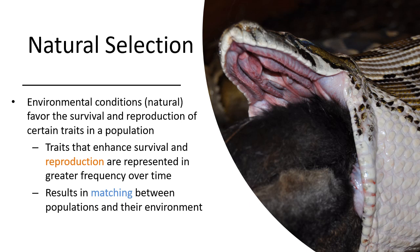An organism that is adapted has traits which allow it to succeed in its environment. For example, a snake is able to unhinge its jaws to eat prey larger than its head — that is an adaptation, a trait selected over time which gives it an advantage for survival and reproduction in its environment.